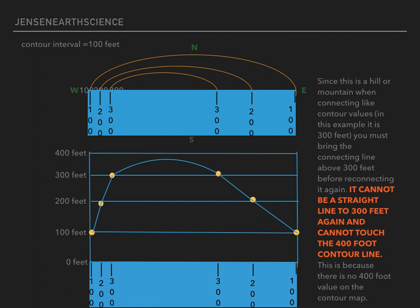And just to reiterate, since this is a hill or mountain, when connecting like contour values, in this example it was 300 feet, you must bring the connecting line above 300 feet before reconnecting it again. It cannot be a straight line to 300 feet and cannot touch the 400 foot contour line. This is because there is no 400 foot value on the contour map.